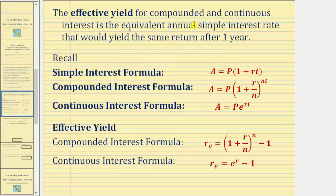The effective yield for compound and continuous interest is the equivalent annual simple interest rate that would yield the same return after one year. Here is the simple interest formula, the compounded interest formula, as well as the continuous interest formula. Below, we have the formulas for effective yield for compound interest as well as continuous interest. This lesson focuses on effective yield for compound interest, so let's begin by determining where this formula comes from.